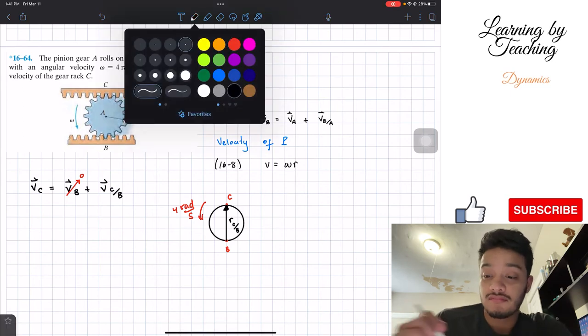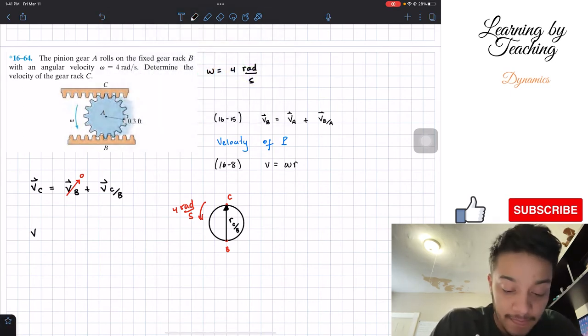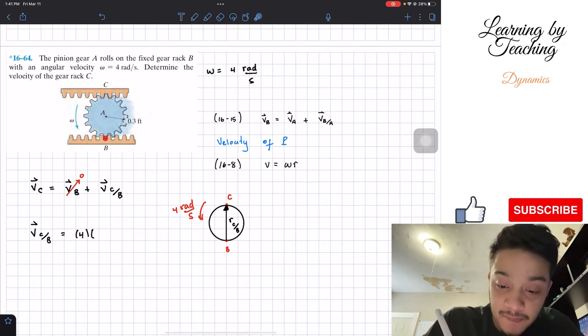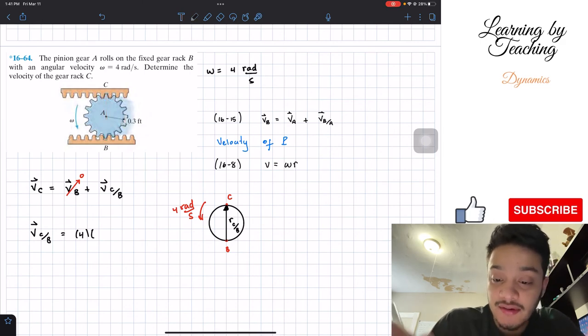We can say that the velocity of C with respect to B is equal to omega, which is 4 radians per second, multiplied by this radius. The radius from B all the way to C equals twice this 0.3, meaning 0.6.